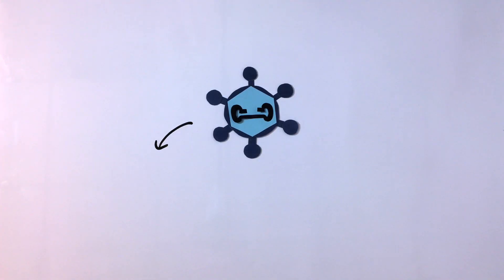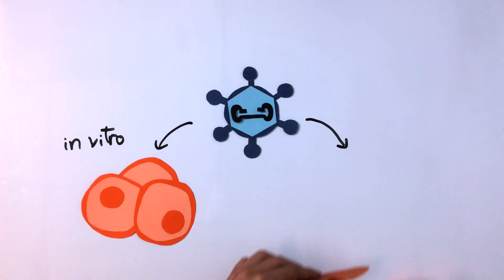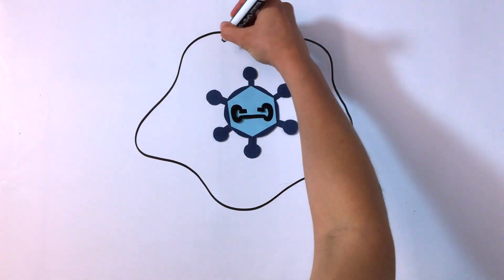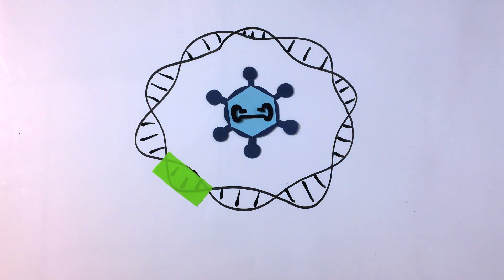The AAV vector has been developed for gene delivery both in vitro and in vivo. This video will cover how to identify an AAV plasmid and understand some of its important elements.